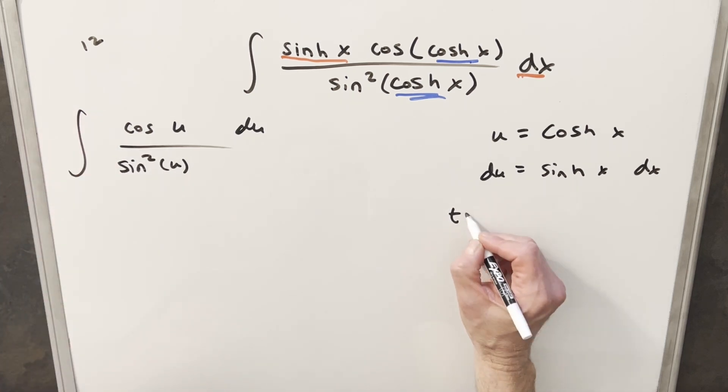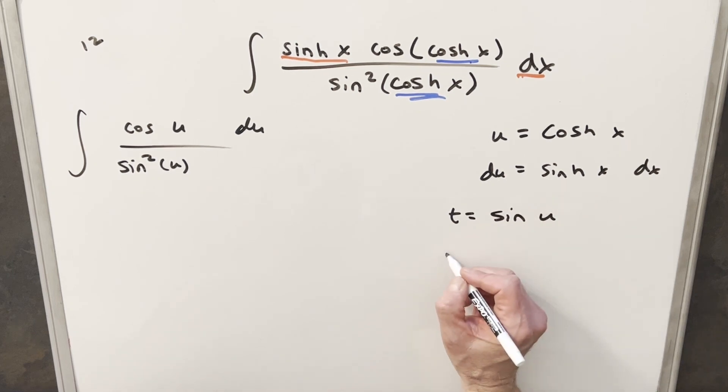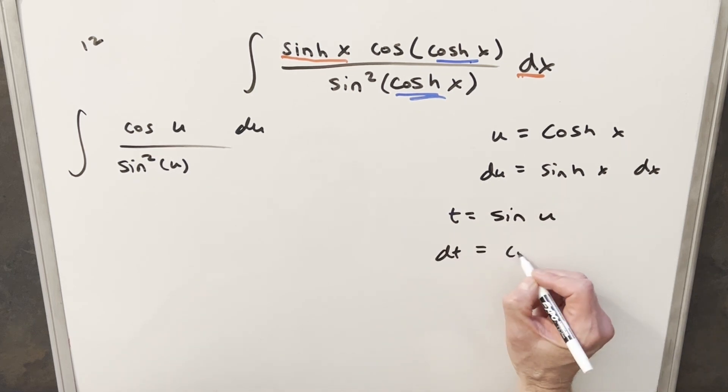So what if I do a second substitution? We'll say t equals sin u. And then take this derivative, dt is going to be cos u du. But one quick note: we're doing two substitutions in a row. It makes me think we could have just rolled this all into one substitution. So if you see it in advance, you can actually just do one substitution. But we'll get to that when we substitute back.